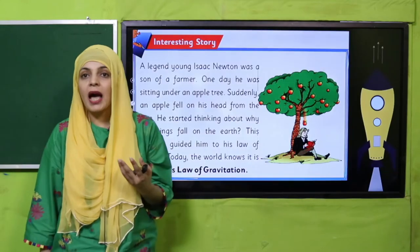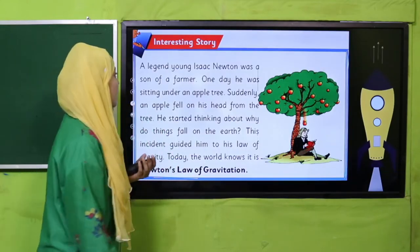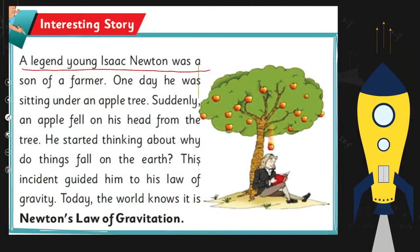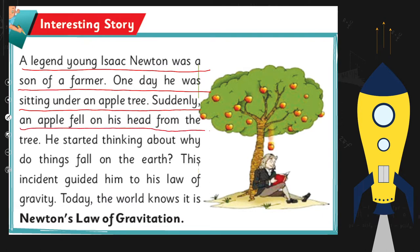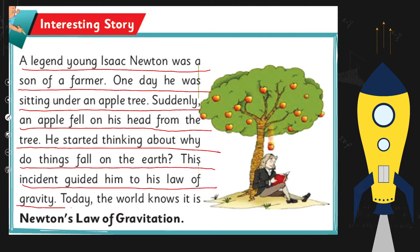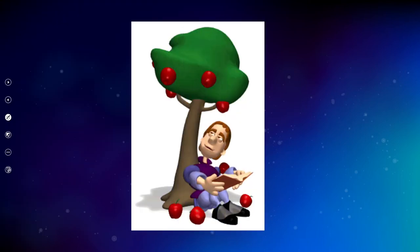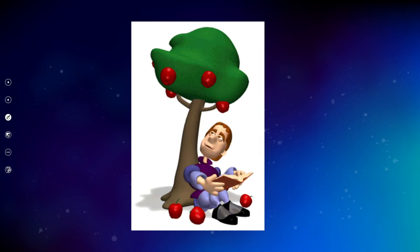Now an interesting story about Isaac Newton. A legend: young Isaac Newton was the son of a farmer. One day he was sitting under an apple tree when suddenly an apple fell on his head from the tree. He started thinking about why things fall on the earth. This incident guided him to the law of gravity, today known as Newton's Law of Gravitation.